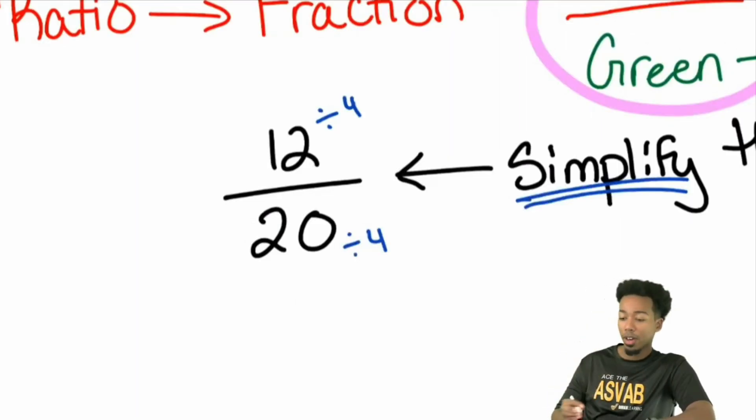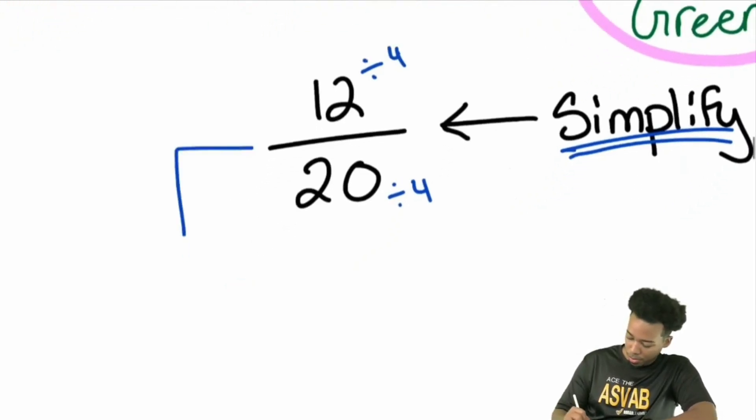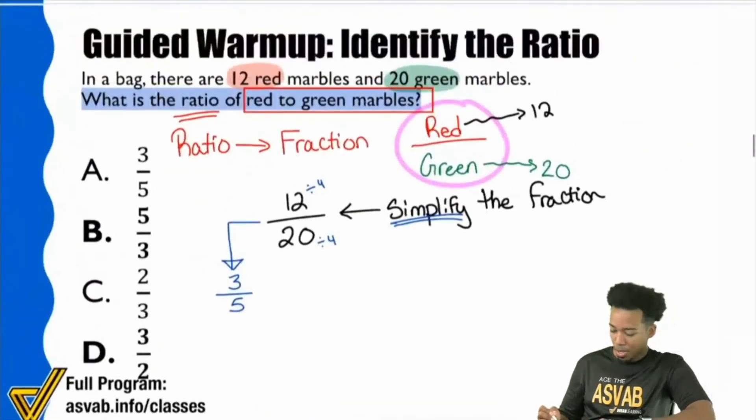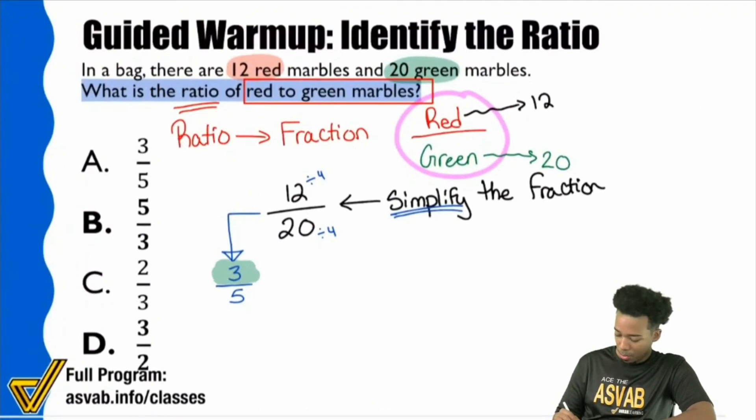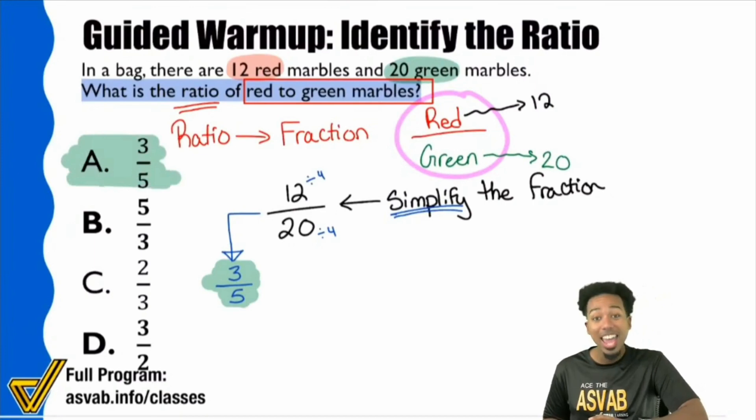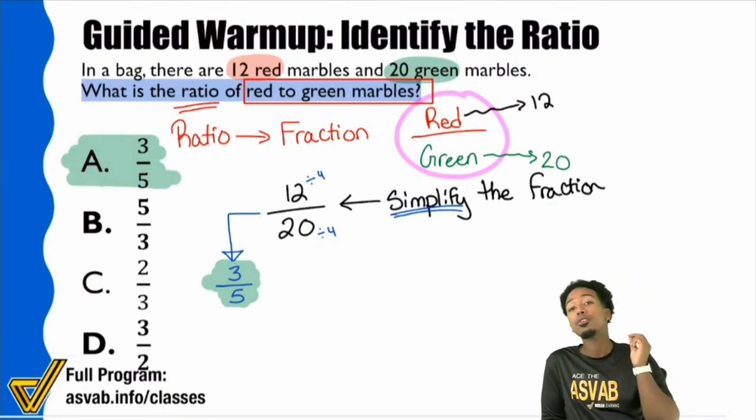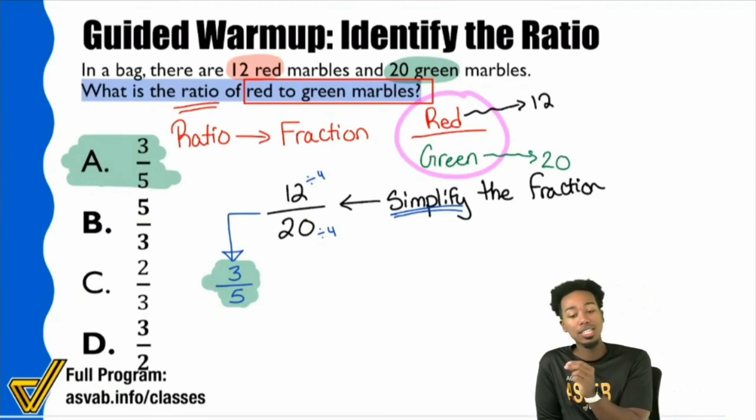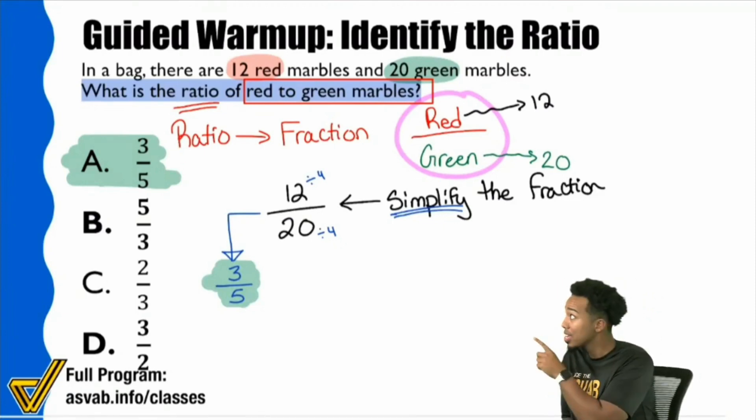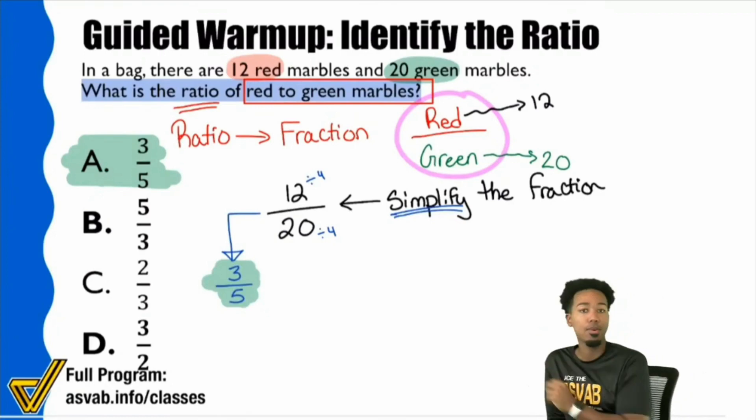12 divided by four is three, and 20 divided by four is five. That would be our correct answer right there. That's why A, not B, is the correct answer. Three to five, not five to three. Three to five because they literally said red to green. That three represents red, the five represents green. It's a ratio of three to five.